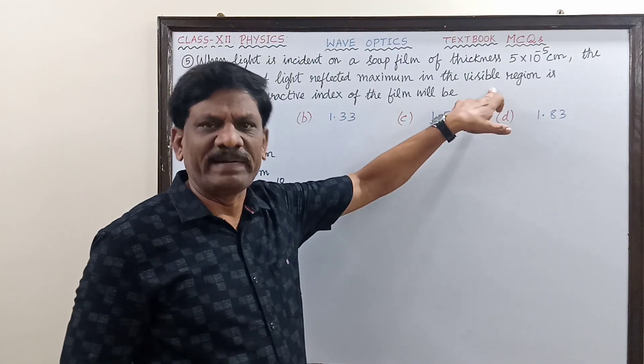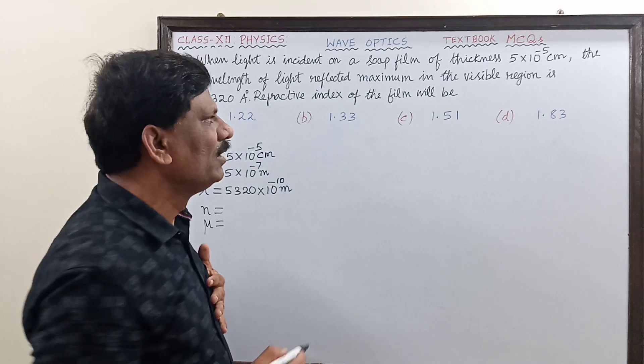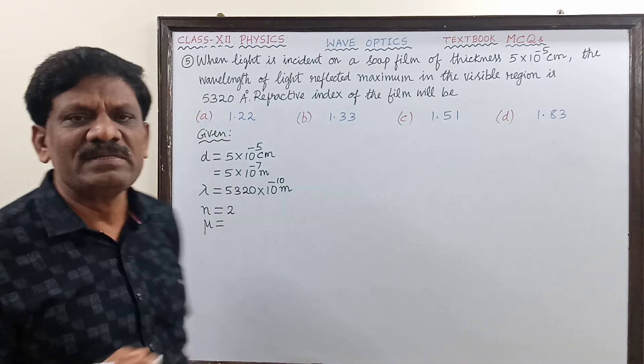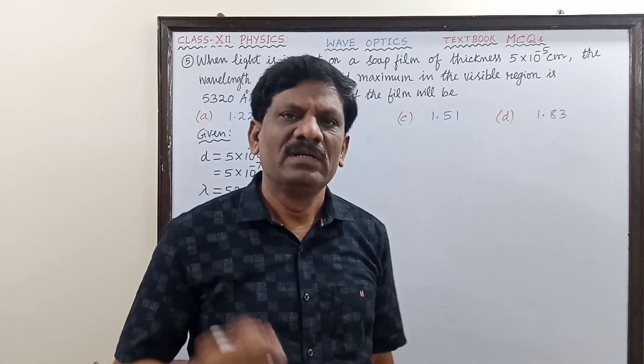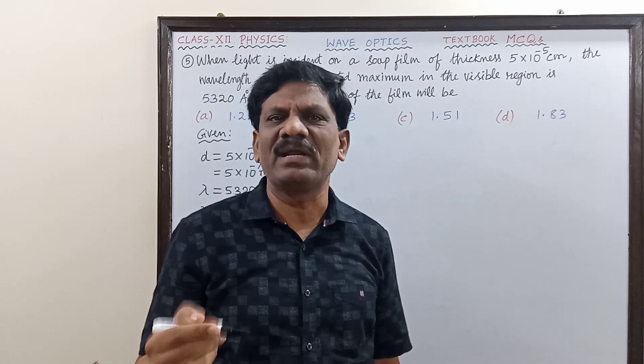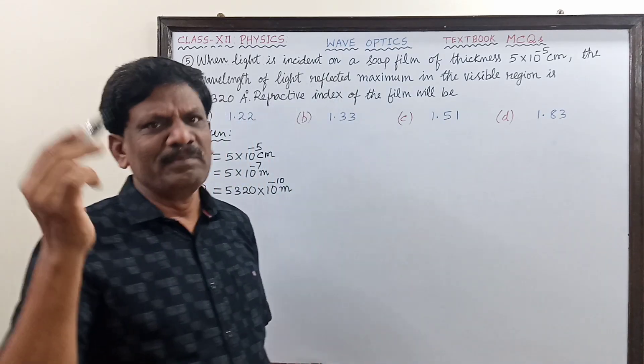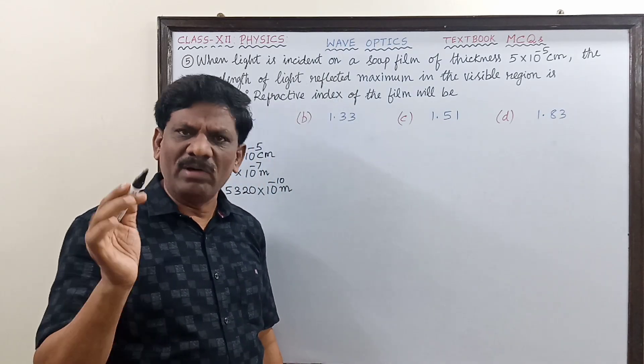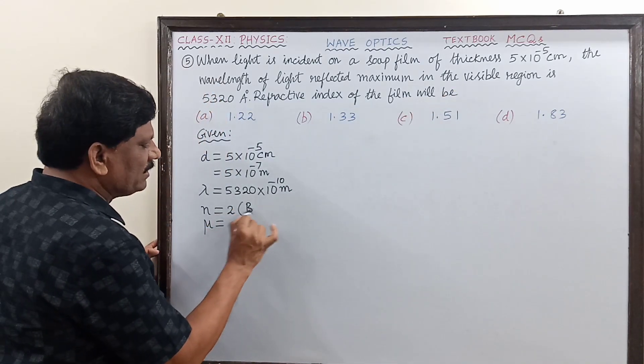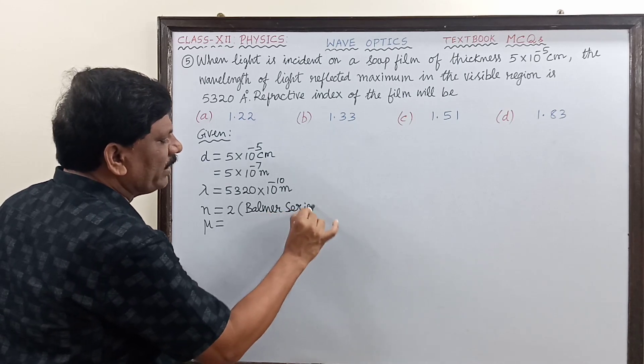The visible region comes in the Balmer series of the spectrum. Lyman series is in the ultraviolet region, Balmer series comes in the visible region for which n = 2. So for visible region, the Balmer series has to be referred here.